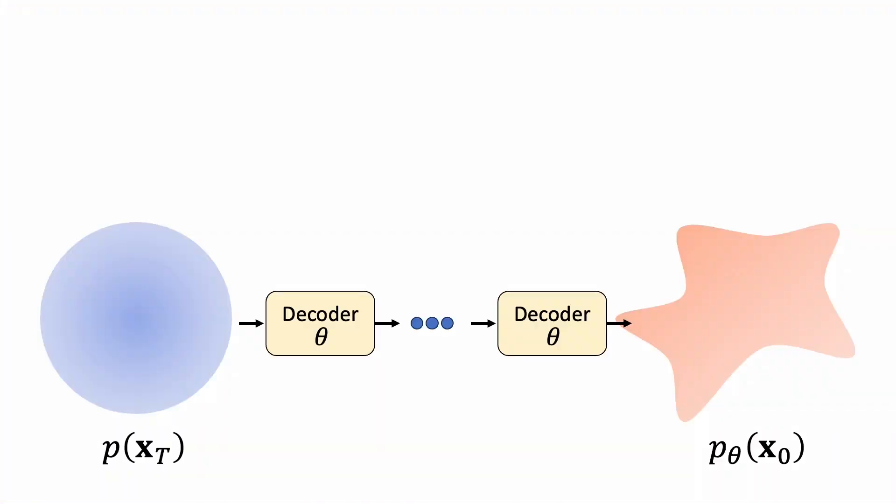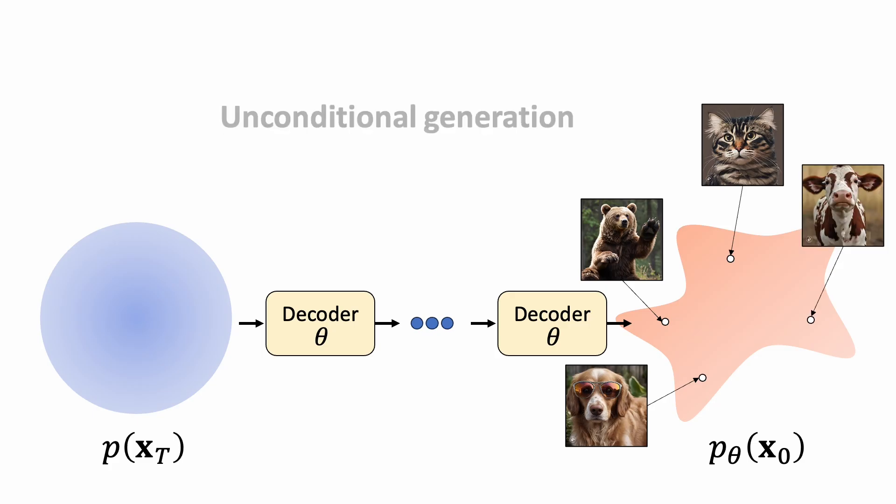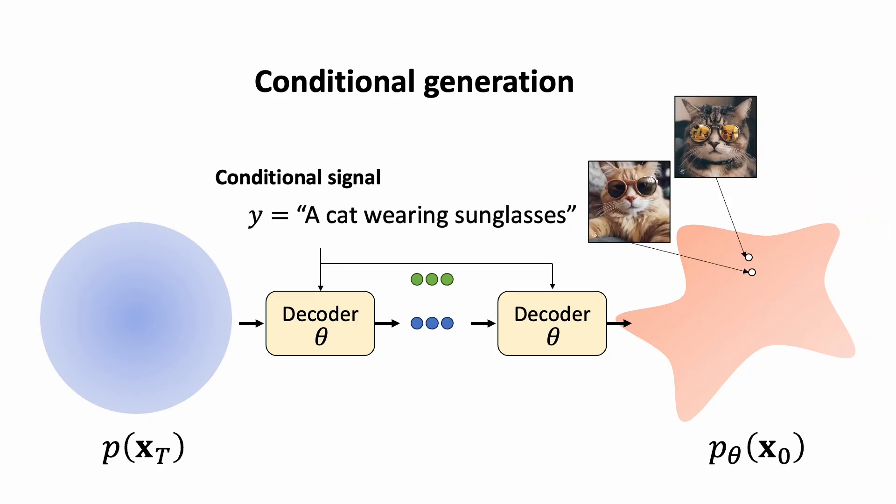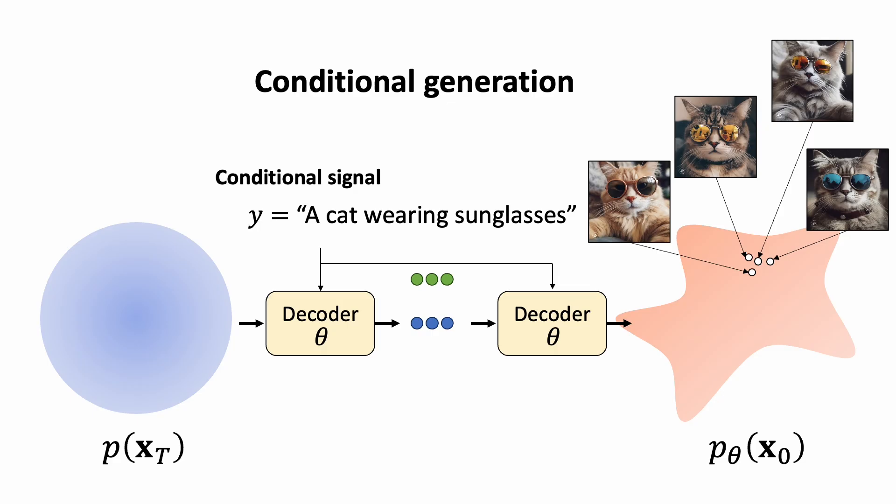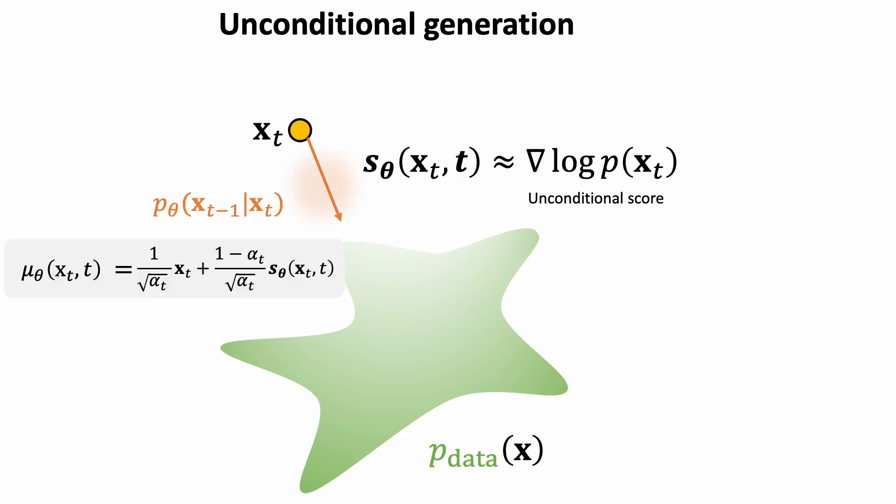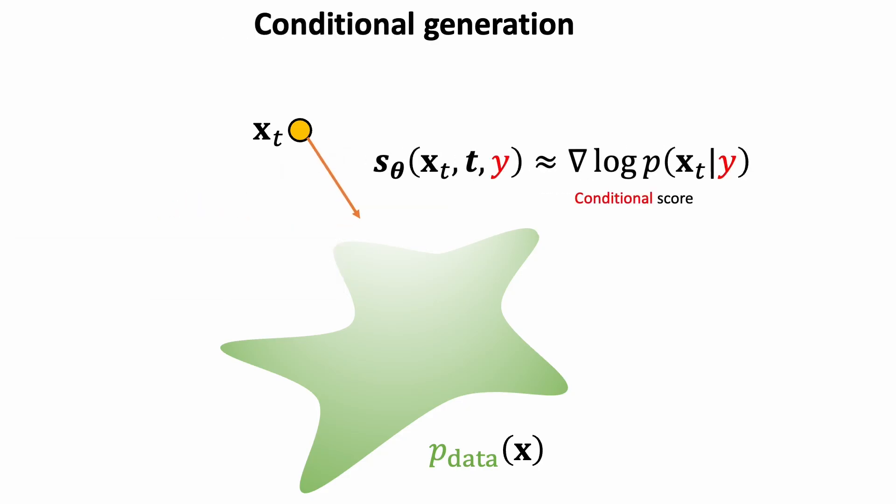After training our diffusion model, we can use the denoising network to generate many samples. This is called unconditional generation. But perhaps we want to ask the model to generate specific contents, like cat images. Or if we want to see more cats wearing sunglasses using a text prompt. Let's revisit the score estimation interpretation of diffusion models. At time step t, we use our denoising network to predict the log likelihood gradient, which is the direction to maximize the log probability. For conditional generation, we want to predict the conditional score.